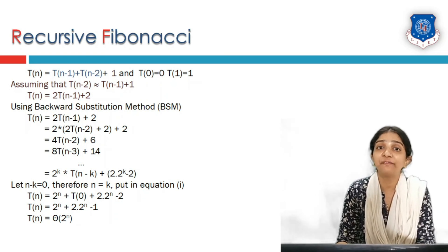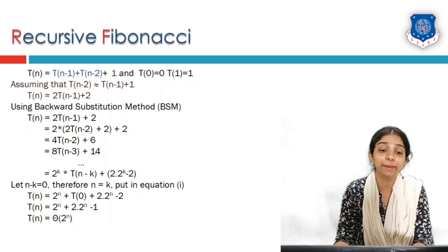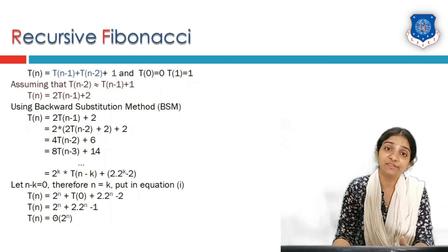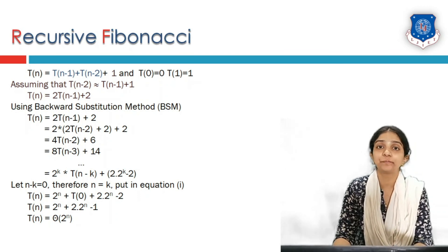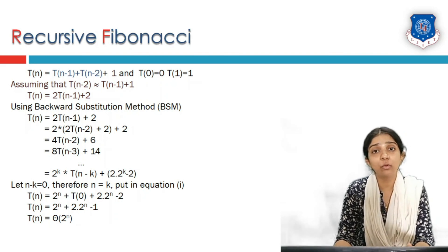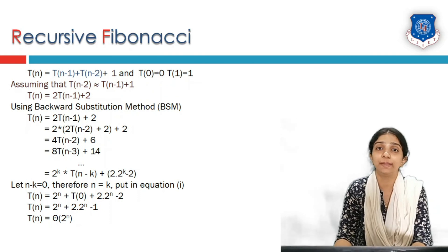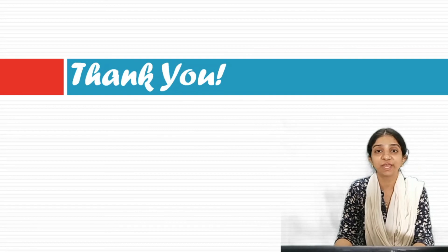From this simplified equation, we can directly write the complexity of the algorithm as O(2^n), which is also Theta(2^n). So the complexity of the recursive Fibonacci algorithm is O(2^n). Thank you everyone for watching this video. This is Munira Topia signing out.